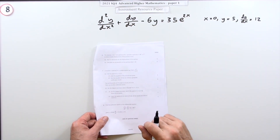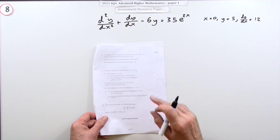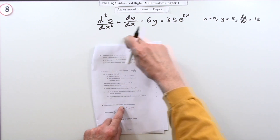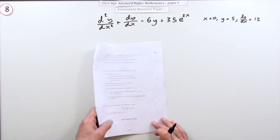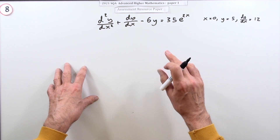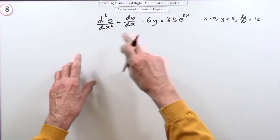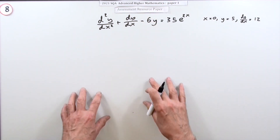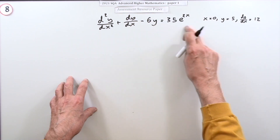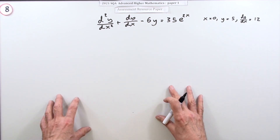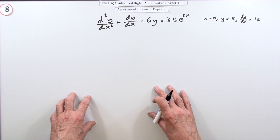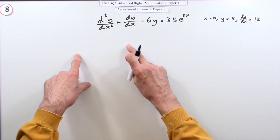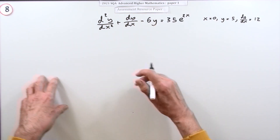Number eight, the last question in paper one of the 2021 Advanced Higher Maths resource paper, nine marks. Find the particular solution to this second-order differential equation. There are three stages: first, solve the homogeneous equation with only the y-terms set equal to zero; then find a solution that produces the right-hand side result; third, combine them to get the general solution and use the initial conditions to get the particular solution.